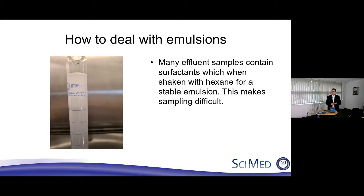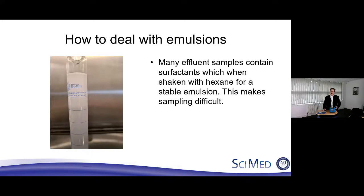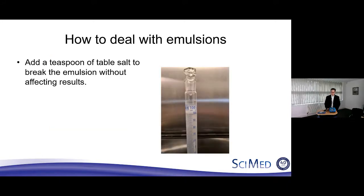A common problem with samples containing surfactants is that rather than getting two nice discrete layers, an emulsion forms — it's very hard to see where the hexane-water separation is, and with more surfactant the emulsion becomes more and more stable and will never separate out. The simplest solution is adding a teaspoon of table salt, which immediately starts to break the emulsion. Sodium sulphate also works very well. After about five minutes of resting, the sample will then have two nice discrete layers.